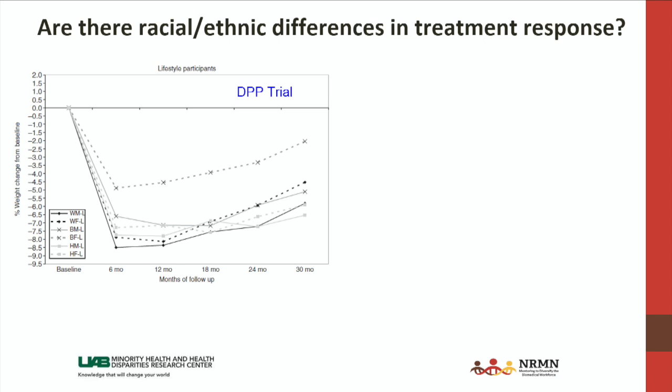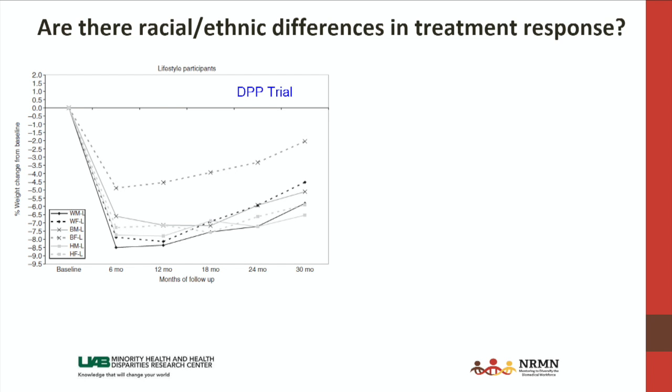Are there differences in racial and ethnic outcomes? Everything presented so far has been looking at general treatment response, but it's also important to look for subgroup differences. Going back to the DPP — the Diabetes Prevention Program — this slide breaks participants out into subgroups based on race and gender: white males and females, black males and females, and Hispanic males and females. Most of the groups tracked together over about a two-and-a-half-year span. But one group stands out — black females — who lost less weight initially and were at a higher body weight at follow-up. Findings from this study suggest that African American women seem to lose less weight than the other groups.